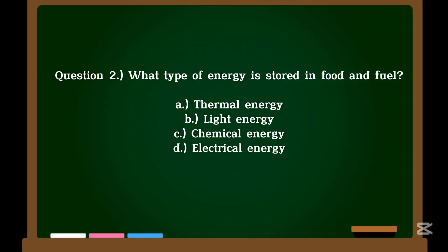Question 2. What type of energy is stored in food and fuel? A. Thermal energy. B. Light energy. C. Chemical energy. D. Electrical energy.